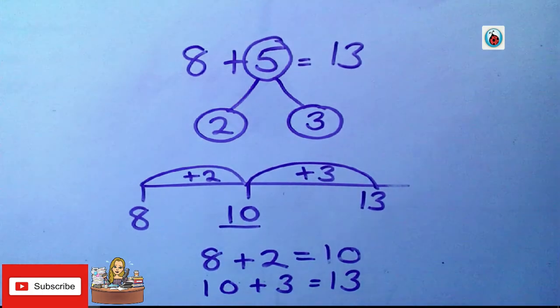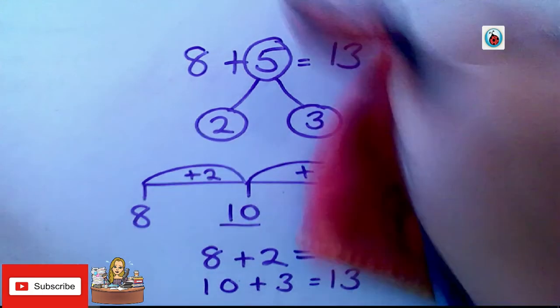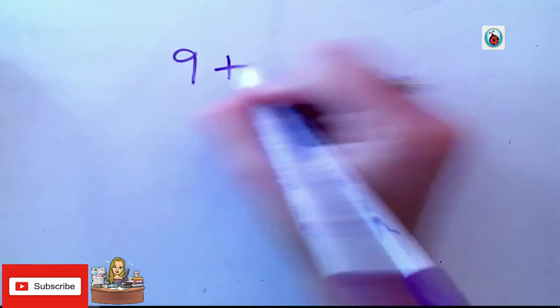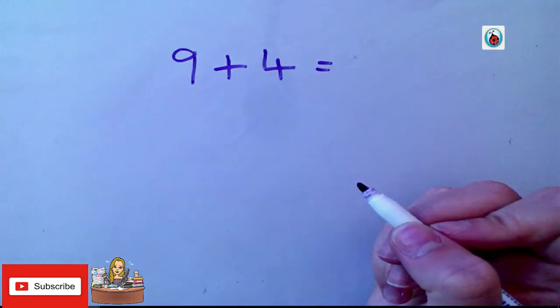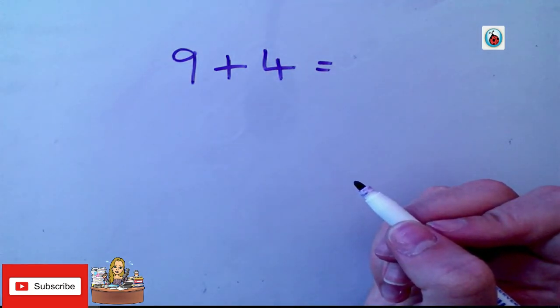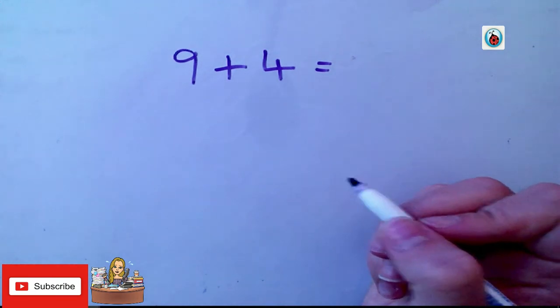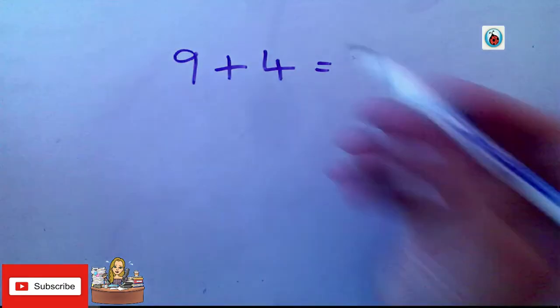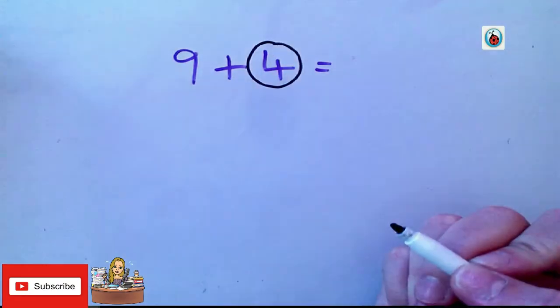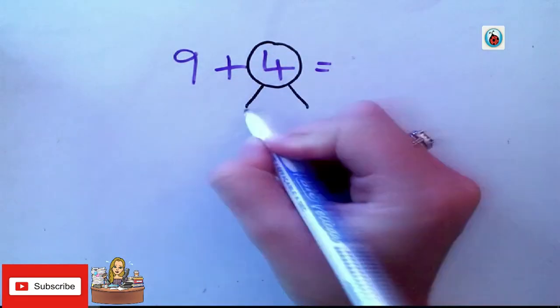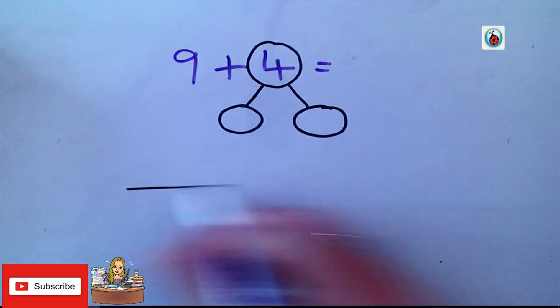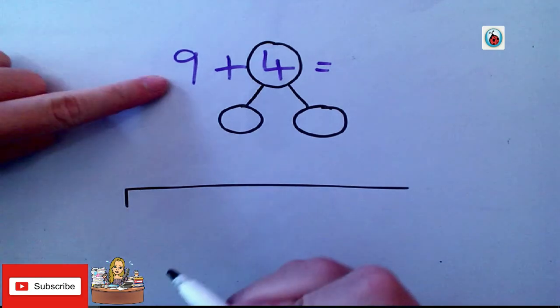Let's do another one. This time, let's do 9 add 4. So, if you like, pause the video and have a go, just like we did the other question, and see what you get. So, exactly the same. I'm going to partition this 4 into 2 different numbers. Now, I'm not sure what 2 different numbers are yet, so let's have a go. Draw my number line. I start on 9.